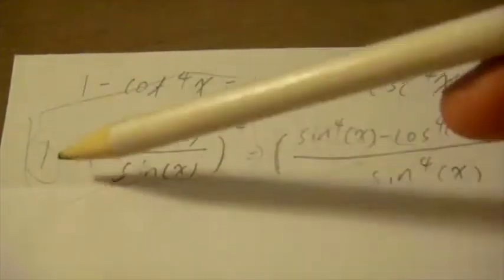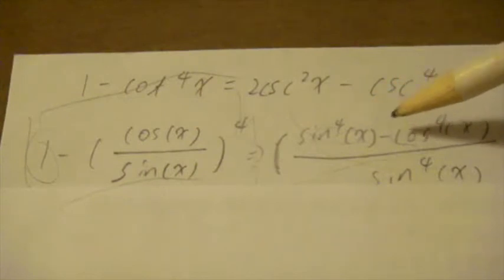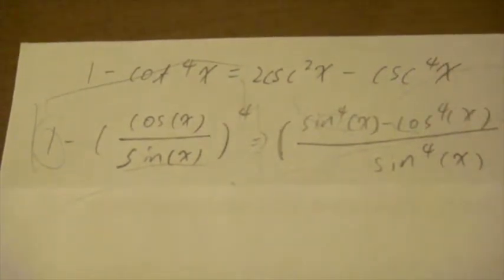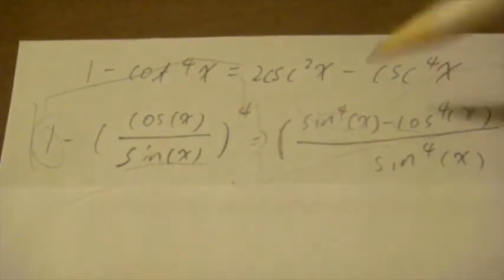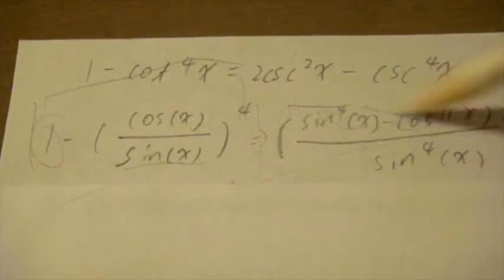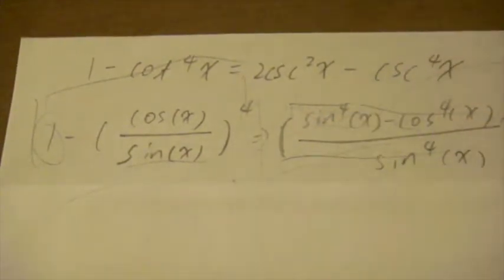Cotangent is also equal to cosine over sine. Then we're going to get rid of the parentheses and get the 1 involved, so it becomes sine 4x minus cosine 4x over sine 4x. Then we're going to start doing the upper part — just being lazy and taking the easier, more efficient way.